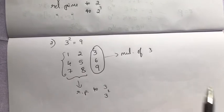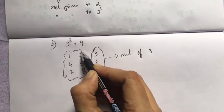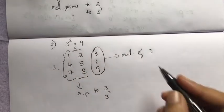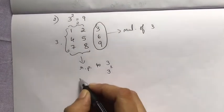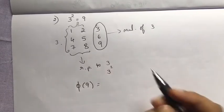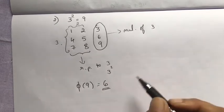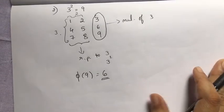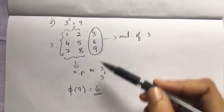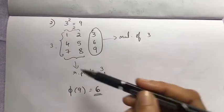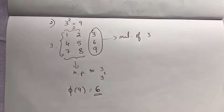How many are there? 2 columns and 3 rows, so phi(9) = 3 × 2 = 6. There are 6 numbers which are relatively prime to 9.